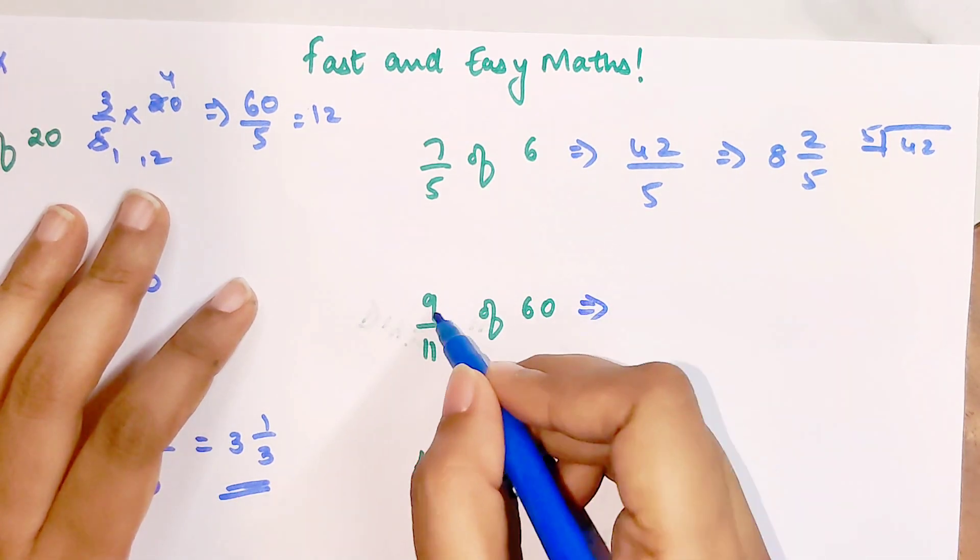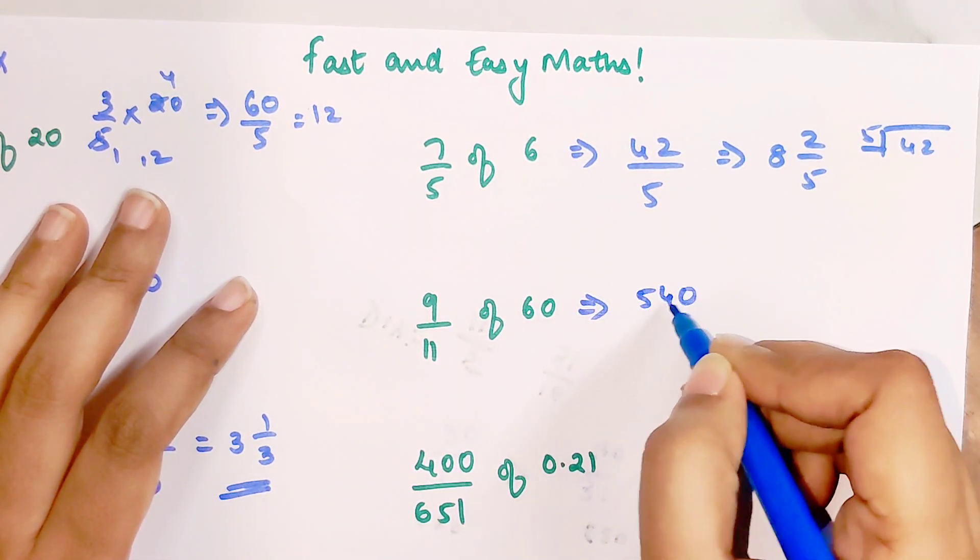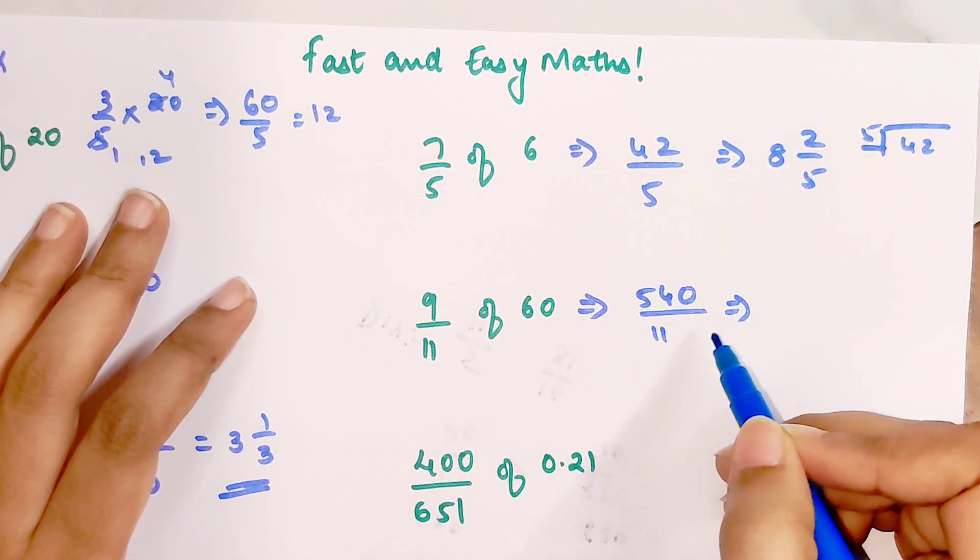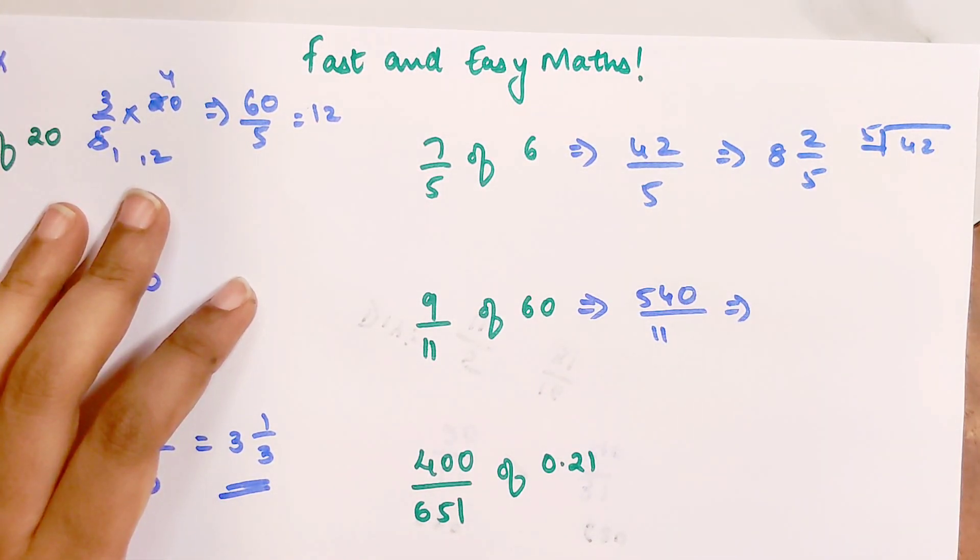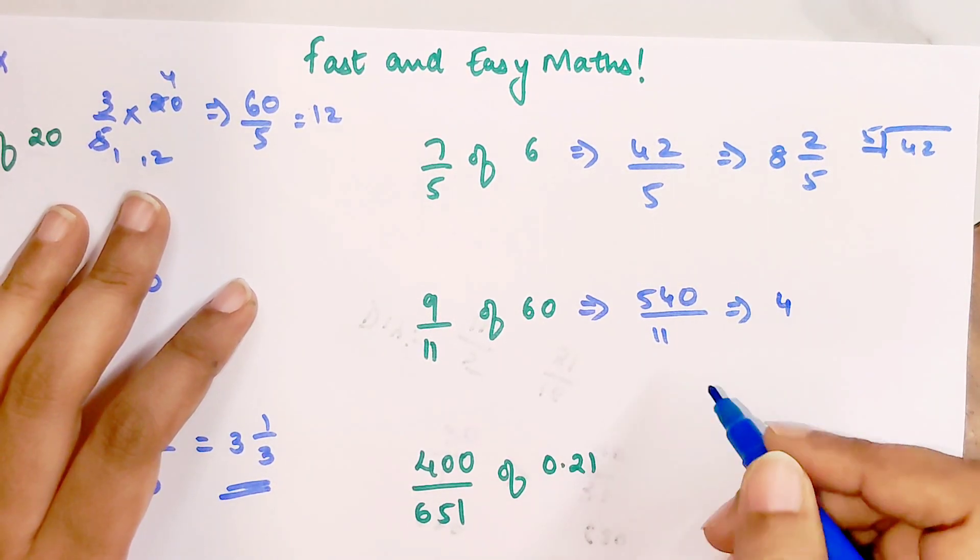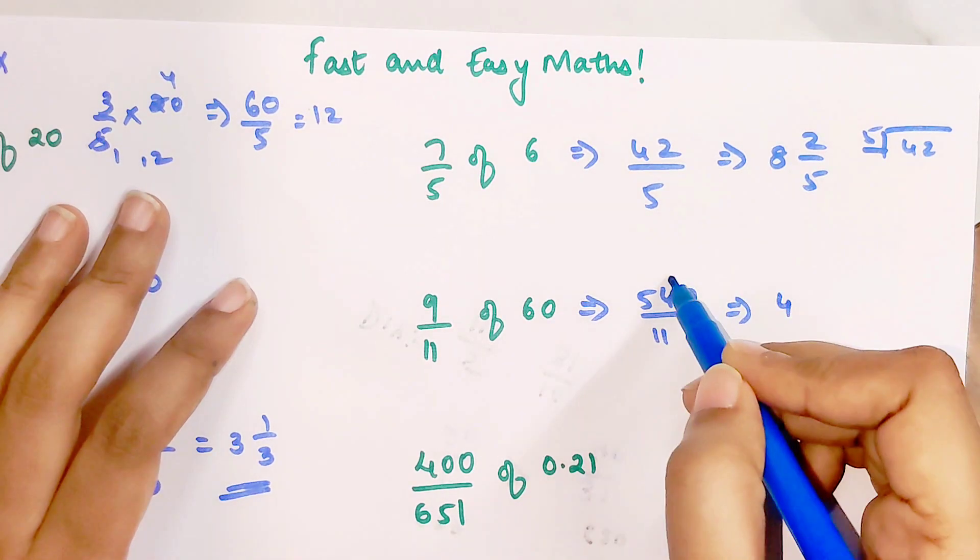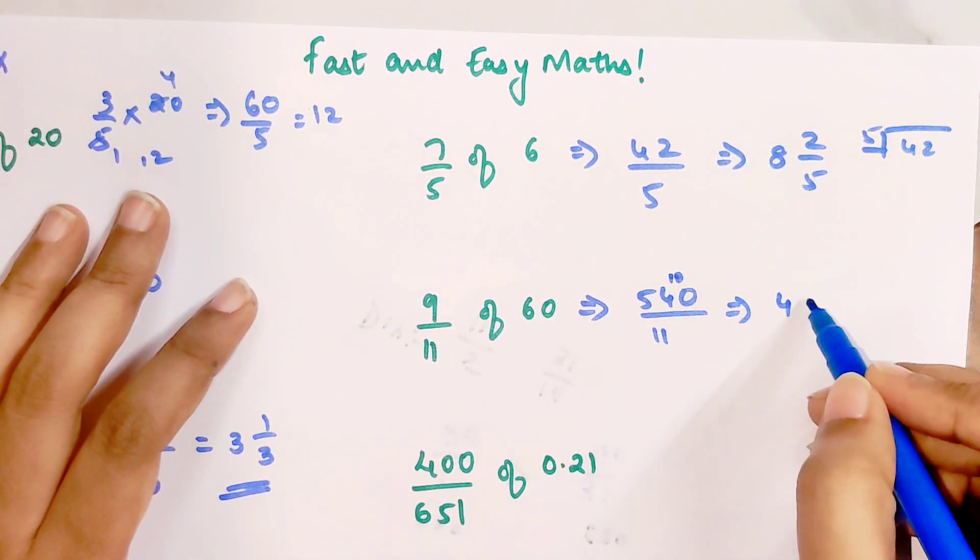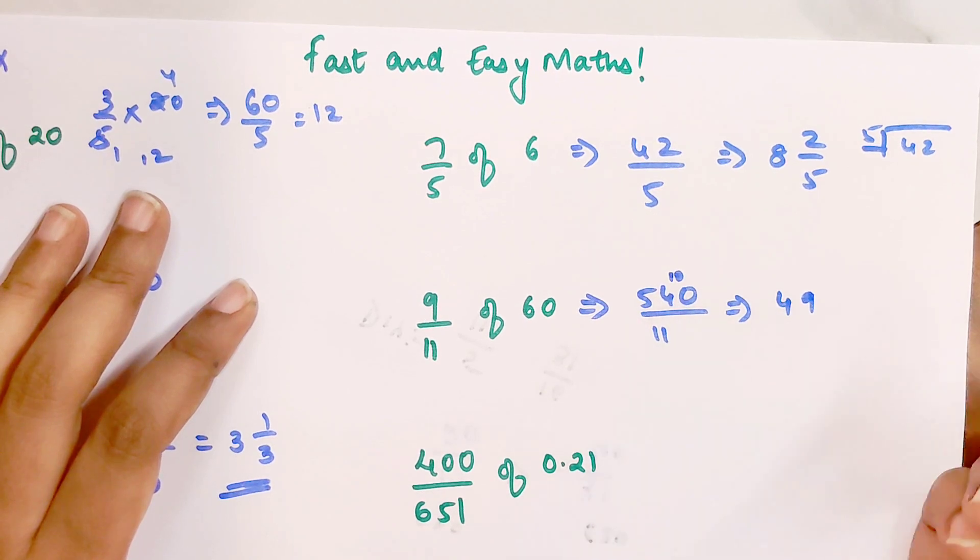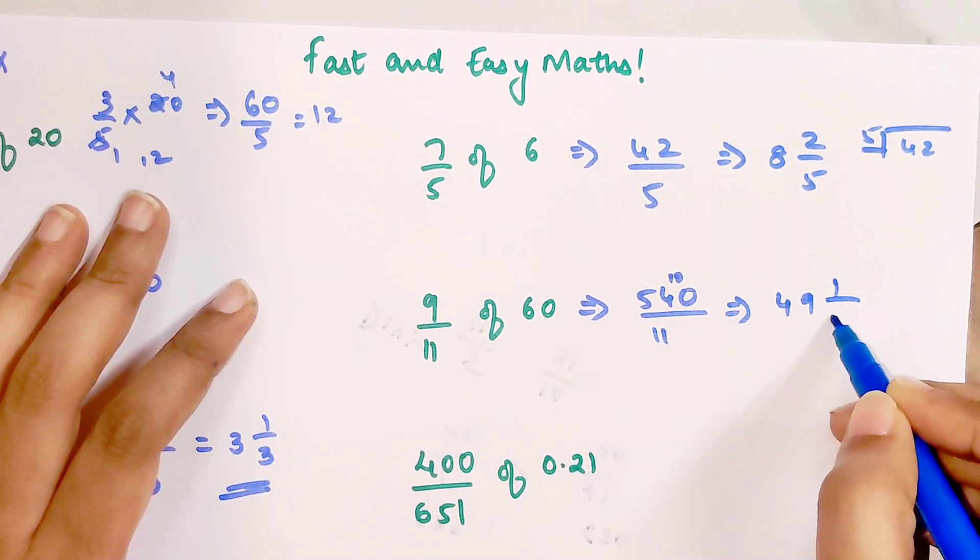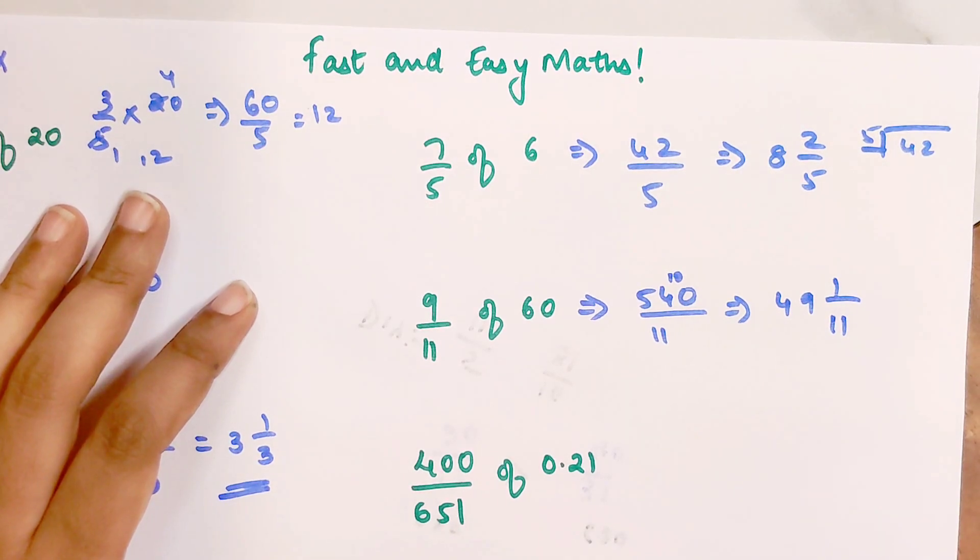The next one, we'll have 540 upon 11. I know that 11 into 4 is 44. 44 taken from 54, I'm getting left with 10. Then I know 11 nines are 99, so what's left when you take 99 away from 100? I'm just left with 1, and that is my answer.